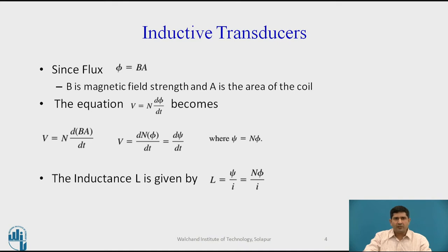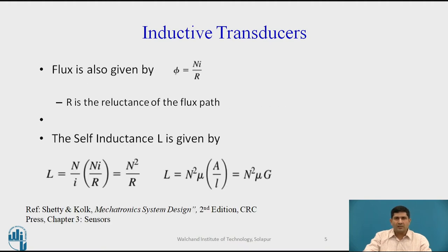So the equation when rewritten is given as V = N dφ/dt, which again gets written as N times the derivative of B into A. The inductance L is given by λ/I, and hence this is rewritten as Nφ/I. Now flux is also given as NI/R, where I is the current and R is the reluctance of the flux path. So finally the self-inductance can be rewritten as L = N²μA/l. The whole intention of this exercise is to see how different parameters can be varied in order to get a certain value of self-inductance.